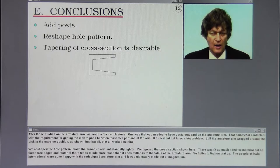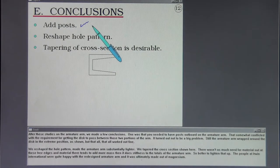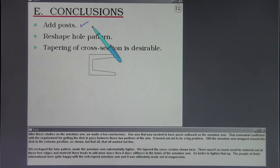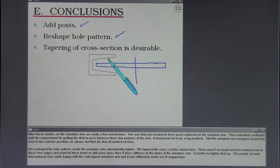After these studies on the armature arm, we made a few conclusions. One was that you needed to have posts outboard on the armature arm. That somewhat conflicted with the requirement for getting the disc to pass between those two portions of the arm. But turned out not to be a big problem. Still the armature arm wrapped around the disc in the extreme position. We reshaped the whole pattern, made the armature arm substantially lighter. We tapered the cross section. There wasn't as much need for material out at these free edges. Material there tends to add more mass than it does stiffness to the total armature arm. So better to lighten that up. The people at Irwin International were quite happy with the redesigned armature arm, and it was ultimately made out of magnesium.